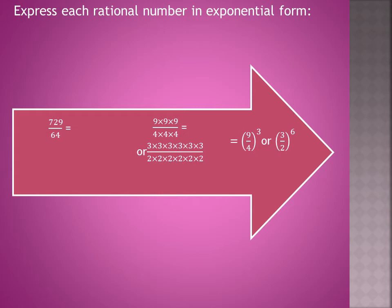9 to the power 3 is a factor of 729, or 3 to the power 6 is also a factor of 729. But 4 to the power 3 or 2 to the power 6 is also a factor of 64, and this is the exponential form for 729 upon 64.